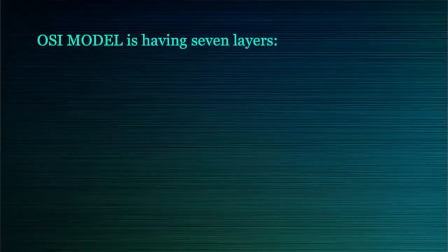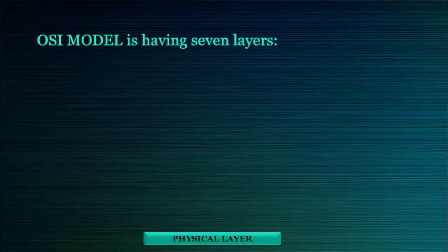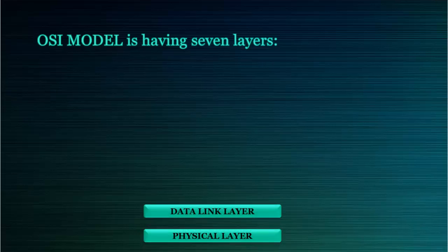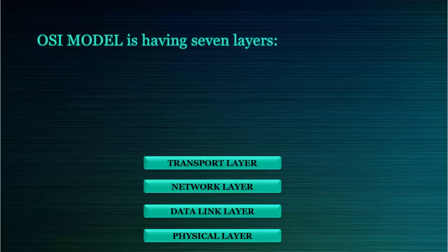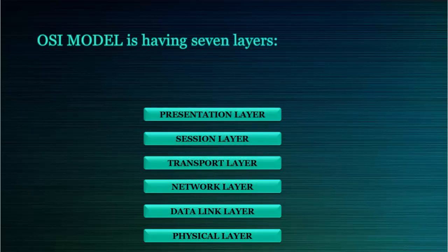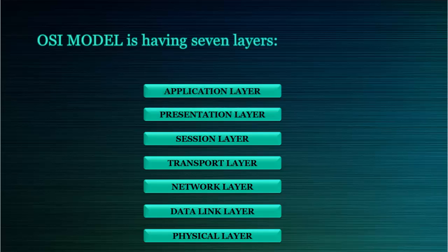OSI Model has seven layers. The first layer is the physical layer, then data link layer, network layer, transport layer, session layer, presentation layer, and the seventh layer is the application layer.